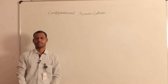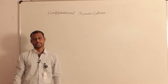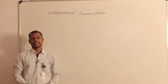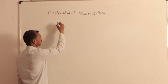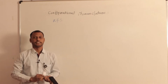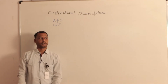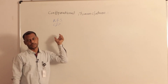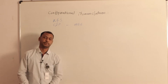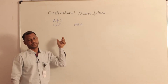Today we want to see the BSc first part, and the topic is configurational nomenclature. This configurational nomenclature comes under optical isomerism. Here we want to see the R/S nomenclature, also called CIP nomenclature. CIP stands for the three scientists Cahn, Ingold, and Prelog, who suggested the nomenclature for optical isomers in 1956.